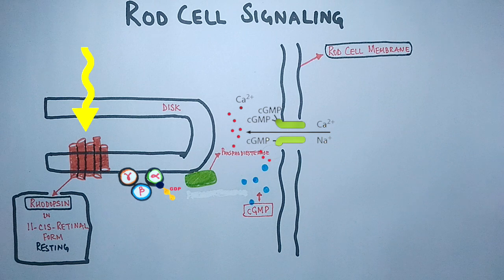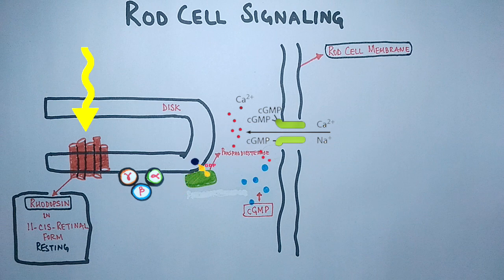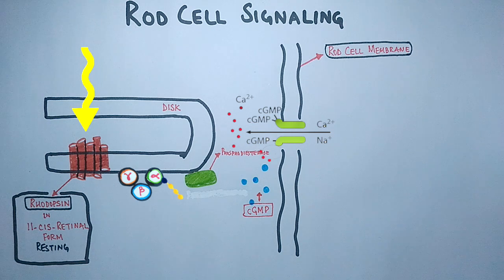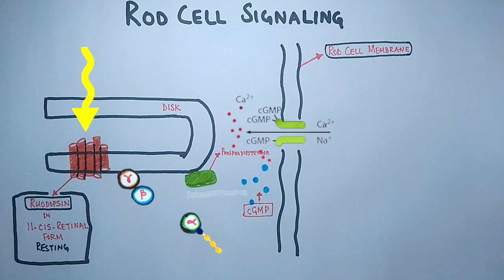The opsin further activates the regulatory protein transducin as shown in the figure, which causes the transducin to displace its bound GDP with GTP. After that, the alpha subunit of transducin dissociates from the beta and gamma subunits, with the GTP still bound to the alpha subunit.